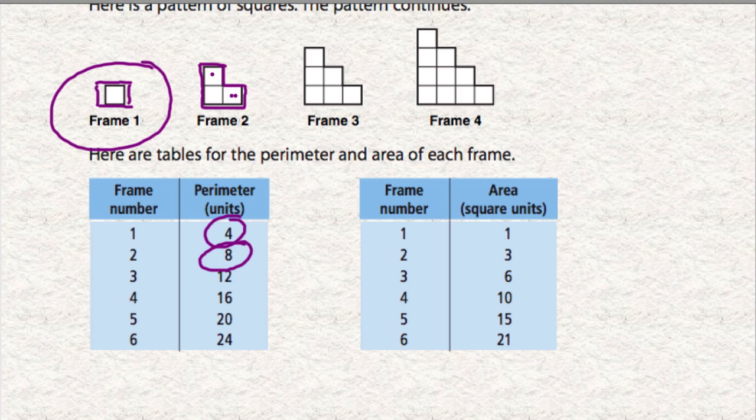Notice when we're talking about perimeter, we don't include the side lengths on the inside of the shape. It's only around the outside. So again, frame three, one, two, three units, four, five, six, seven, eight, nine, ten, eleven, twelve. That's where the numbers are coming from in the table.